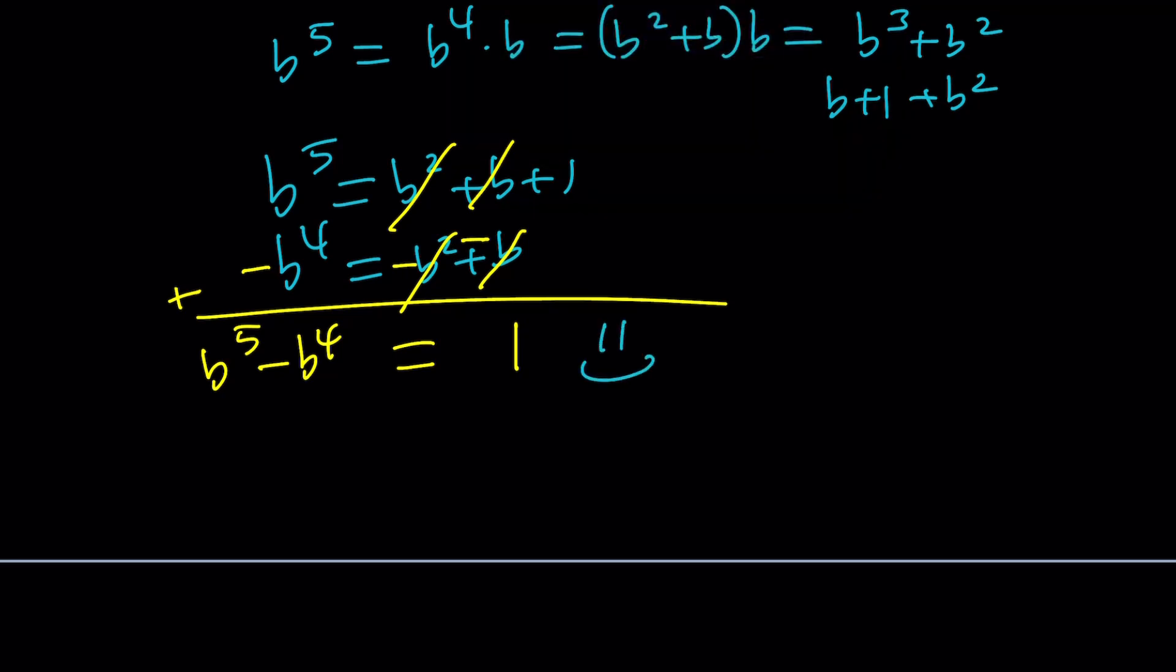We get 1, which is kind of interesting too. But if you look at it, you'll get it, right? Once you know that it's 1, because in other words, we're saying that b cubed minus b is the same as b to the fifth minus b to the fourth.